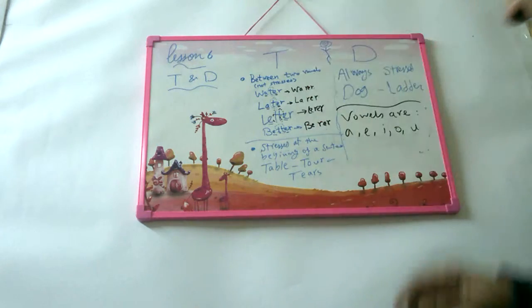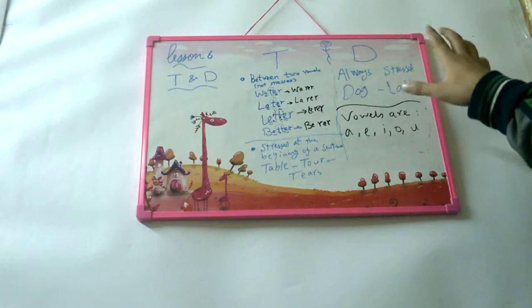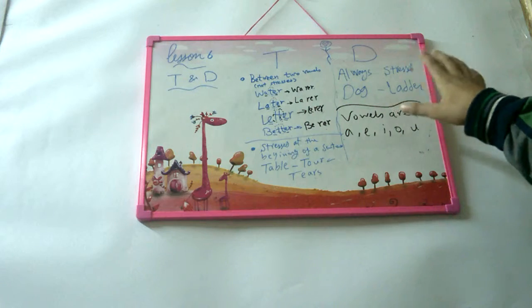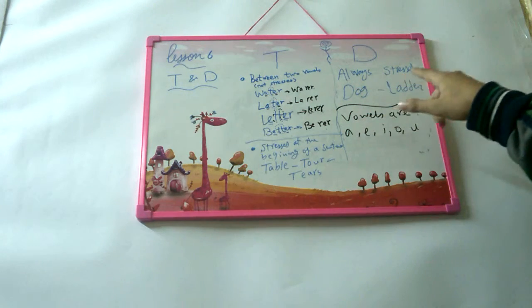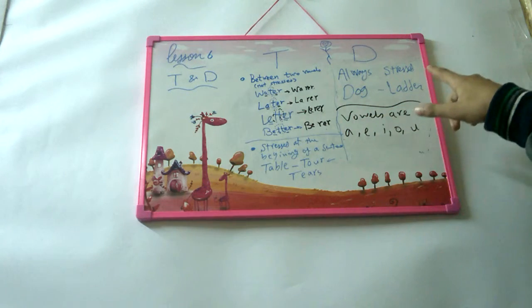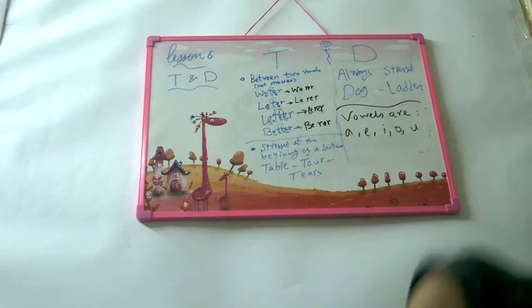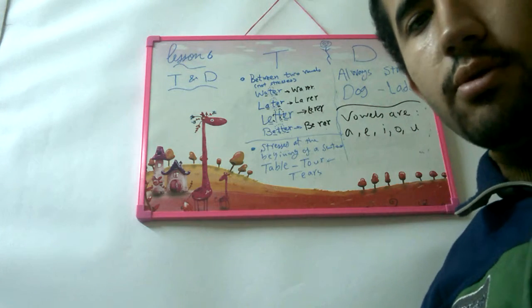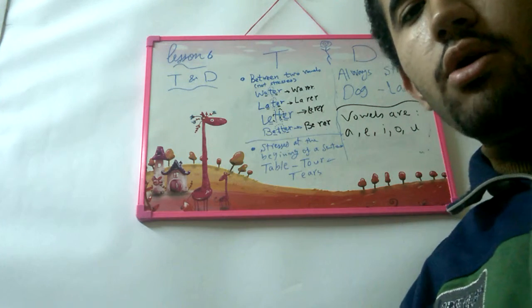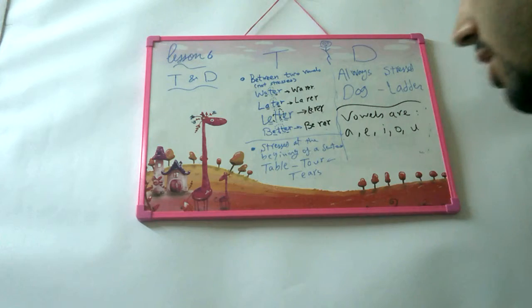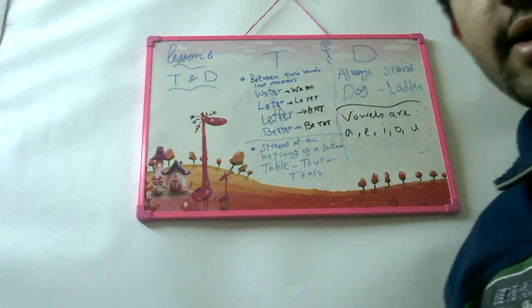Let's start with the voiced sound D. D is always stressed and always voiced, so you can say 'dog,' 'ladder,' and so on. Now, remember the vowels: A, E, I, O, U. We have some rules for T.